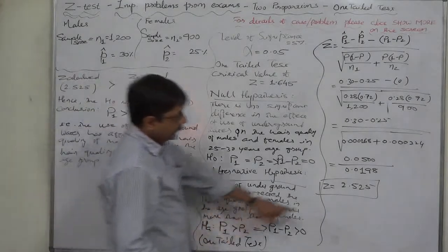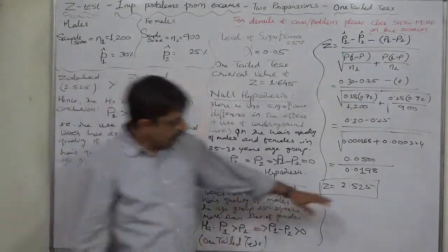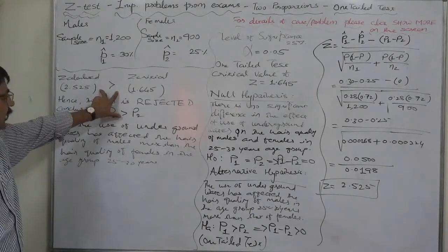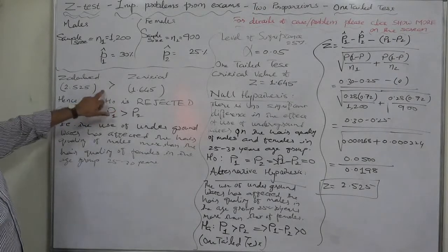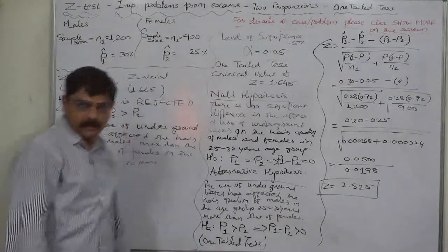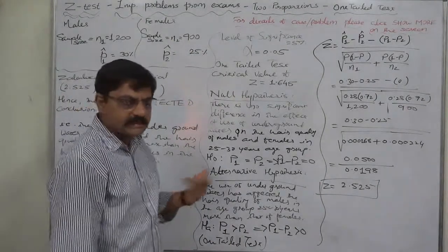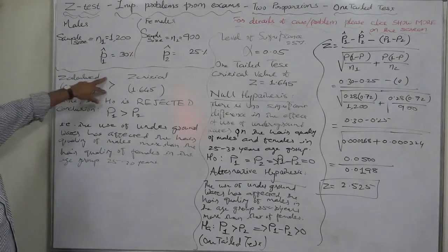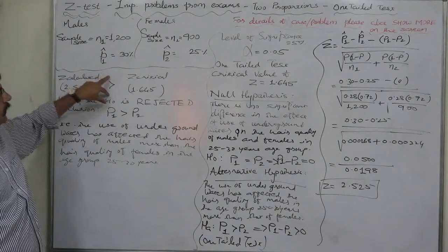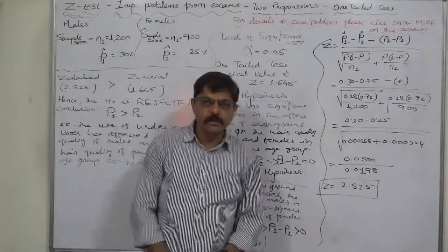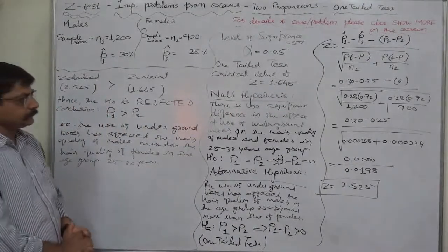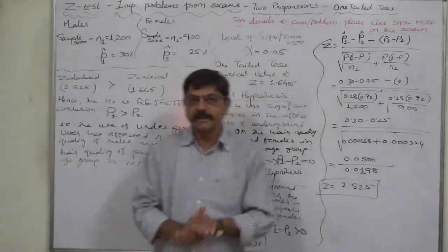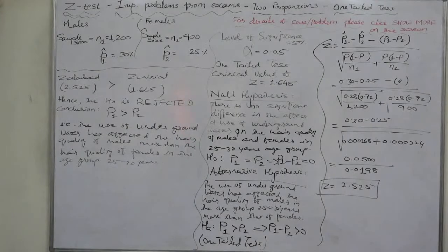As an exercise, please calculate the p-value. Remember: in case of p-value, the criteria are opposite — if the p-value is less than alpha (for one-tailed test), we reject the null hypothesis; if less than alpha/2 for a two-tailed test, we reject the null hypothesis. The criteria for p-value comparison are opposite to those for comparing calculated and critical values of the test statistic. The next topic will be the last case in Z-test. Thank you very much.